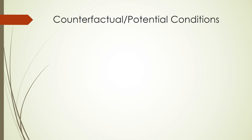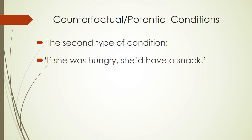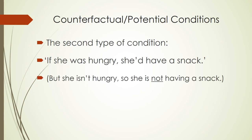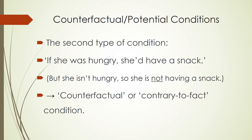The other type of conditional covers the remaining three Latin constructions. It was exemplified in English by 'if she was hungry, she'd have a snack.' This implies she isn't hungry, so she's not having a snack — but if she was hungry, she'd have a snack. This is what we call a counterfactual or contrary-to-fact condition: it goes against the facts.